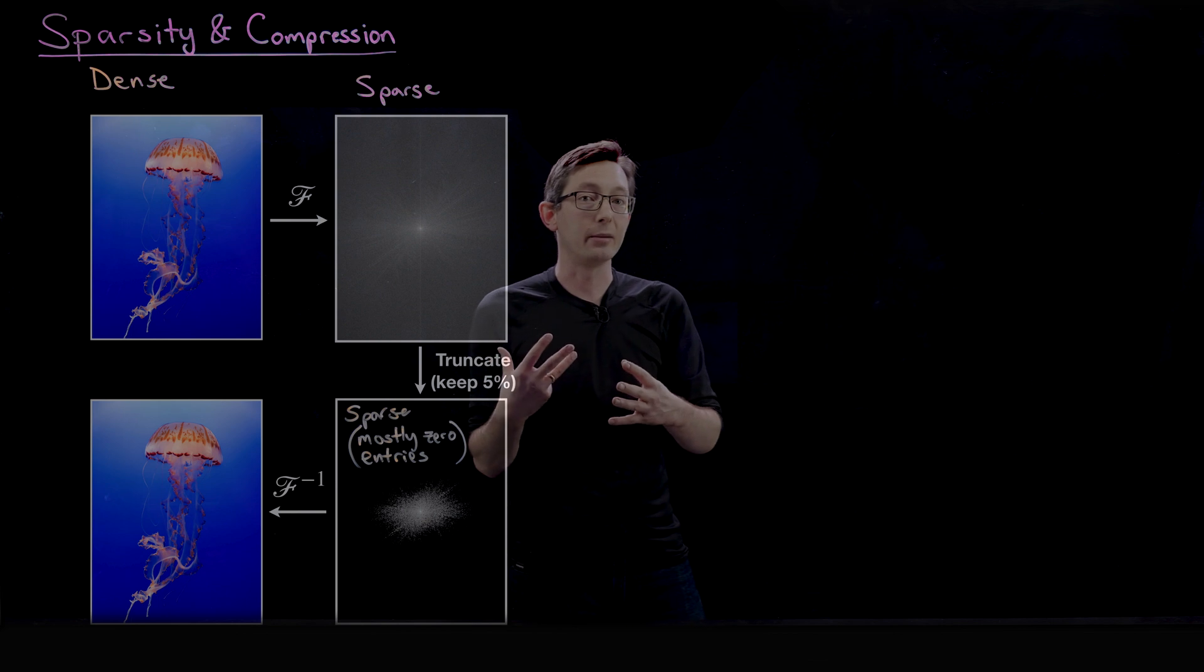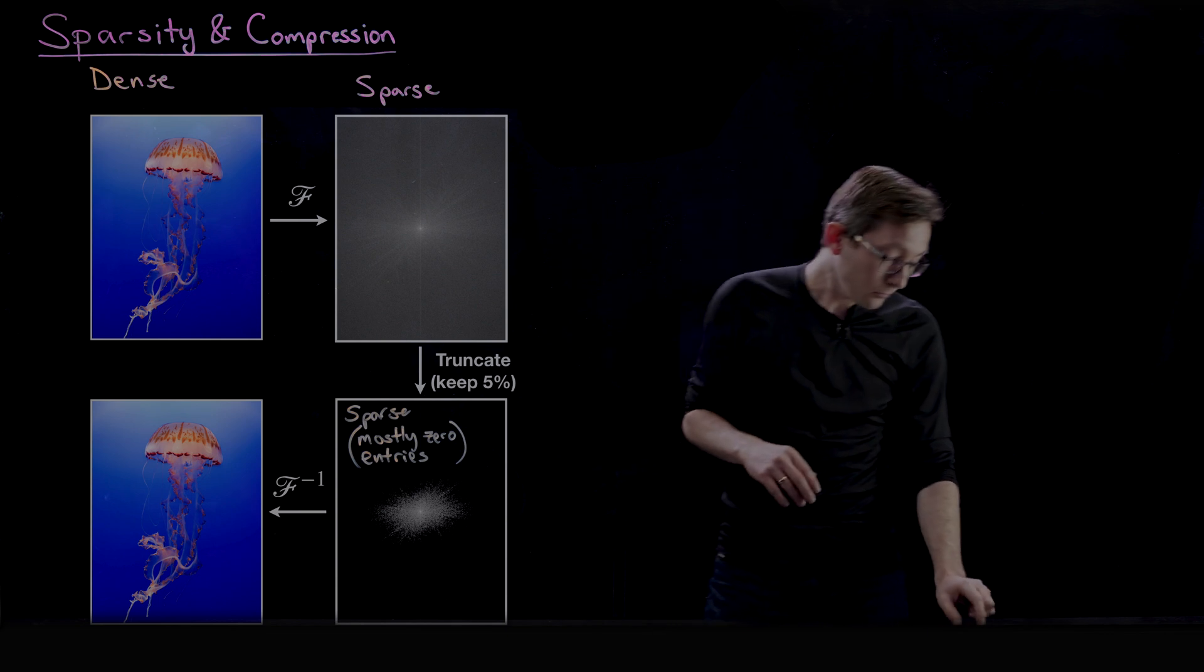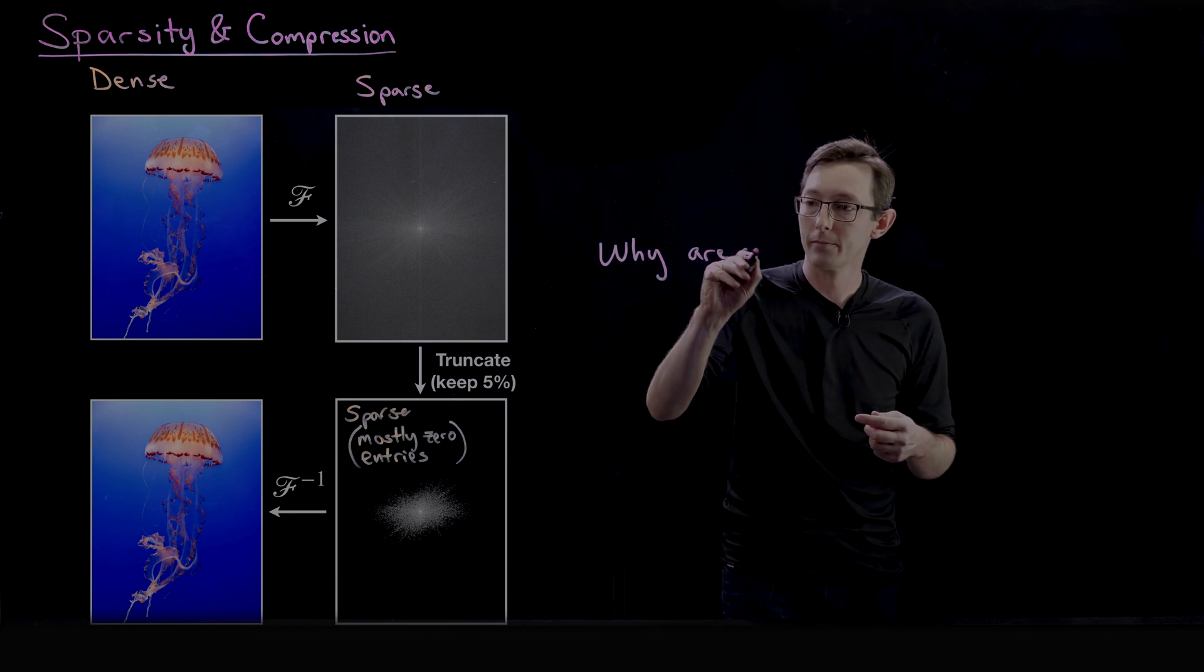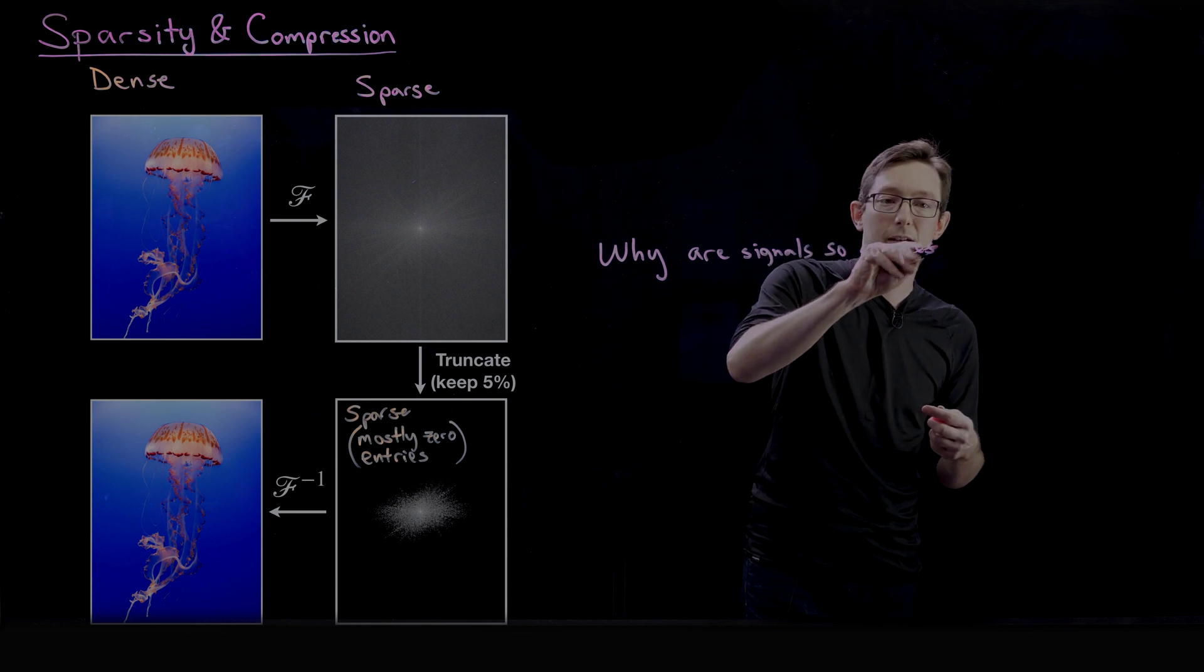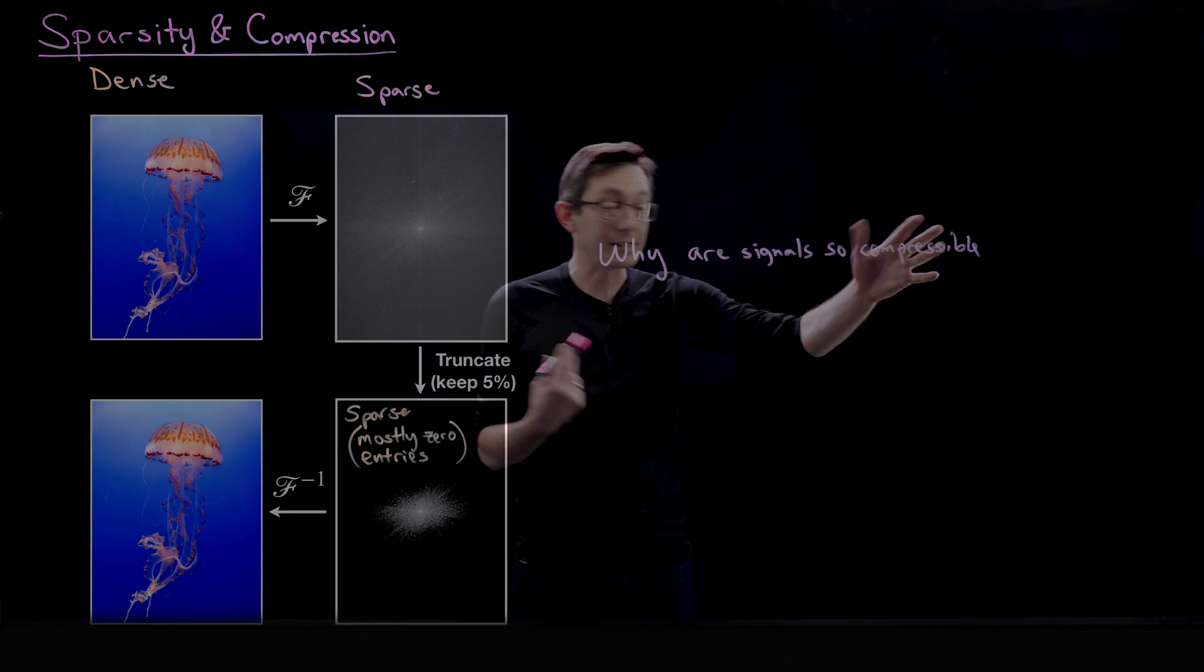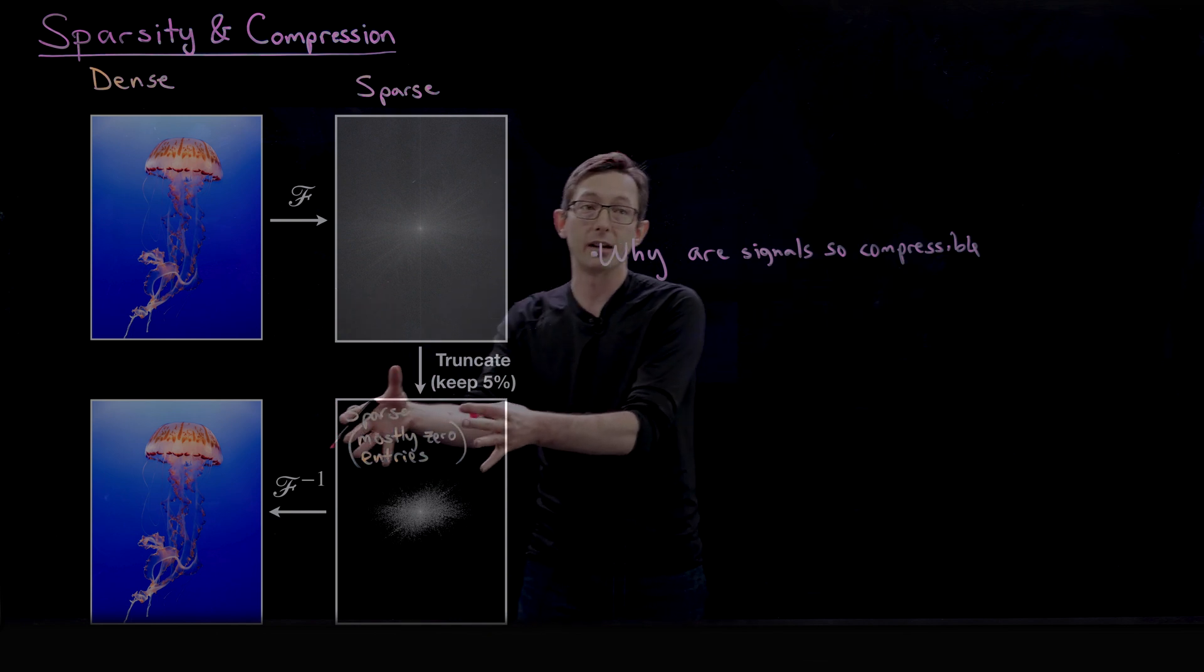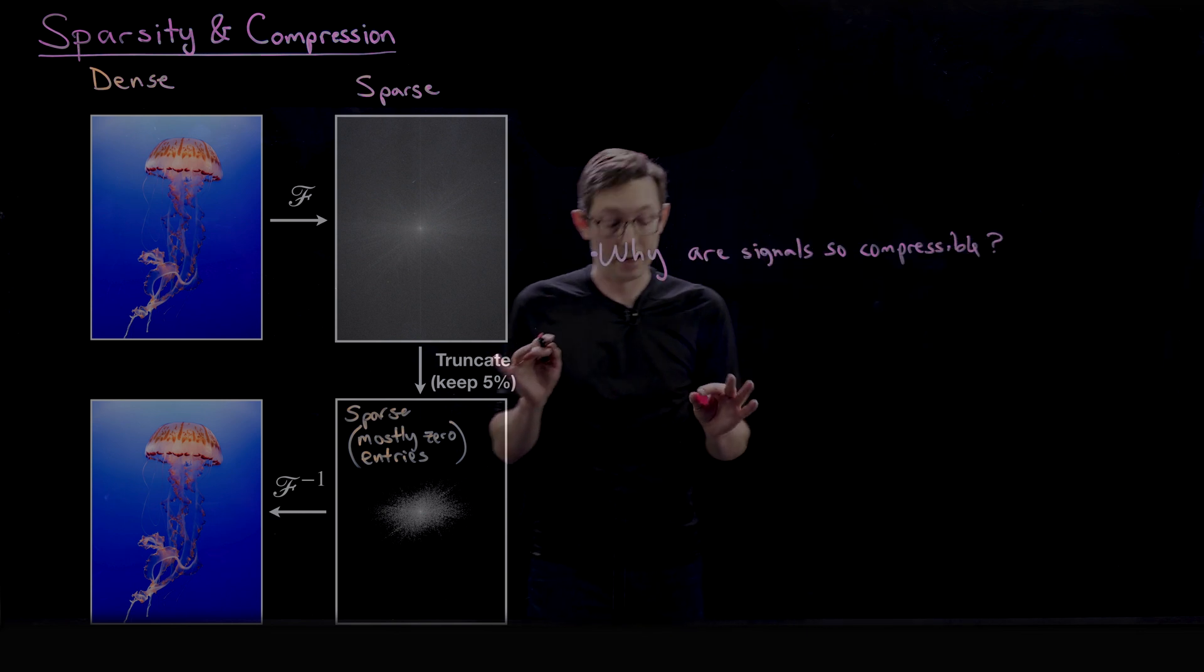So that's the idea of compression. We've already talked a lot about this with respect to the Fourier transform, wavelet transform. But now we're going to turn this whole paradigm on its end and start asking more fundamental questions. Why are signals so compressible? That's maybe the first and most fundamental question. And this is actually one of my favorite areas of applied math, really digging into why signals have so much structure.